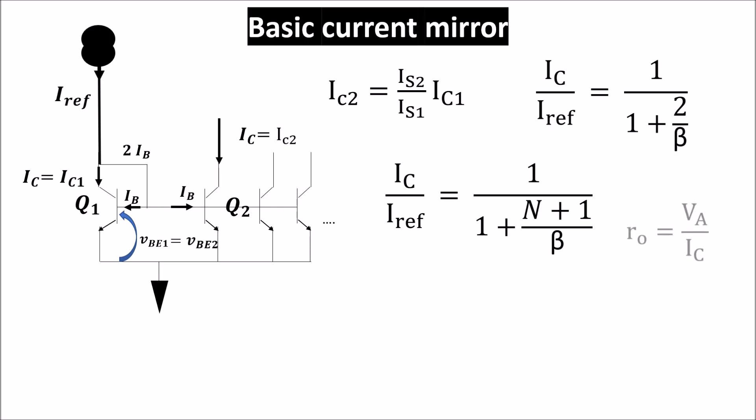Finally, this is the output resistance of the configuration, which tells us how much the mirrored current is stable regardless of the applied load.